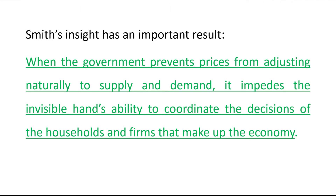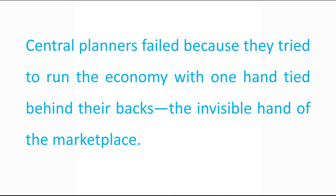Smith's insight has an important result: when the government prevents prices from adjusting naturally to supply and demand, it hinders the invisible hand's ability to coordinate the decisions of the households and firms that make up the economy. That is the reason central planners failed — because they tried to run the economy with one hand tied behind their backs, that is, the invisible hand of the marketplace.